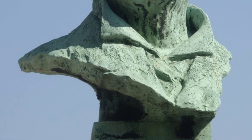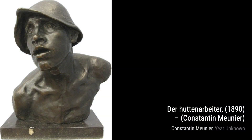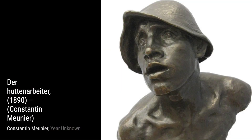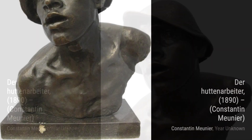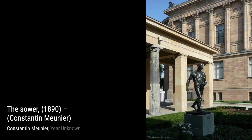Through The Sower, Meunier emphasizes the significance of agriculture and the connection between man and nature. In Monumento Travail, Detail 6, Meunier continues to celebrate the working class, shedding light on their resilience and unwavering spirit. Now let's explore De Buildrager, 1898 — Meunier's attention to the human form is evident in this sculpture, capturing the strength and endurance of a construction worker.